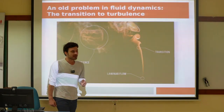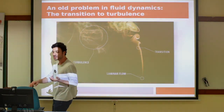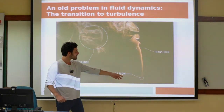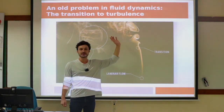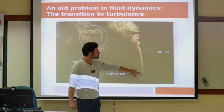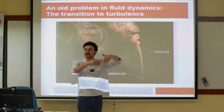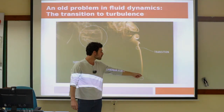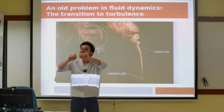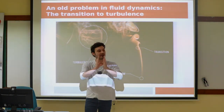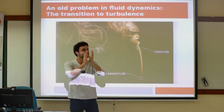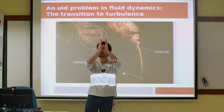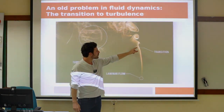The transition to turbulence is a very ancient problem. Think of smoke from a cigarette: at first the column of smoke rises in an orderly fashion — this is laminar flow, where layers of fluid remain more or less parallel to each other, possibly at different speeds, but remaining parallel. This is simple to describe in fluid dynamics and has a steady state.